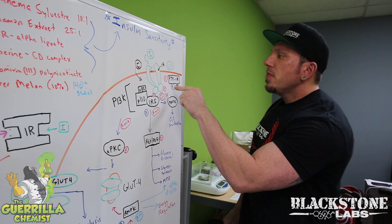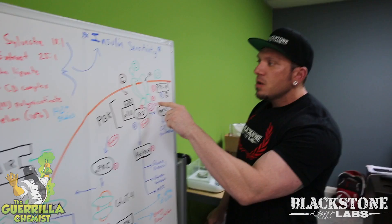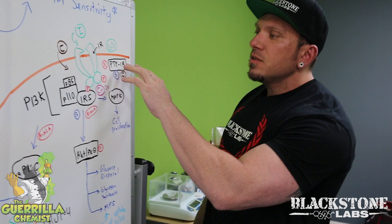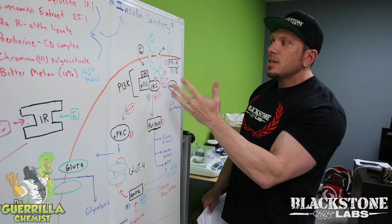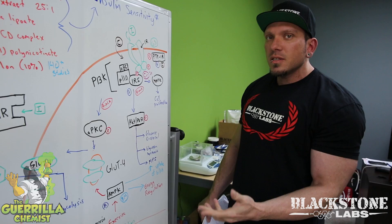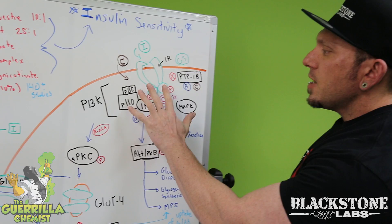Up here is PTP1B — that is a phosphatase enzyme that actually prevents the activation of these pathways. If PTP1B is active, then the insulin signaling cascade is inactive and none of this response happens. This is often the case if somebody has insulin resistance versus being insulin sensitive, meaning they don't utilize glucose very well. This pathway will completely negate everything.